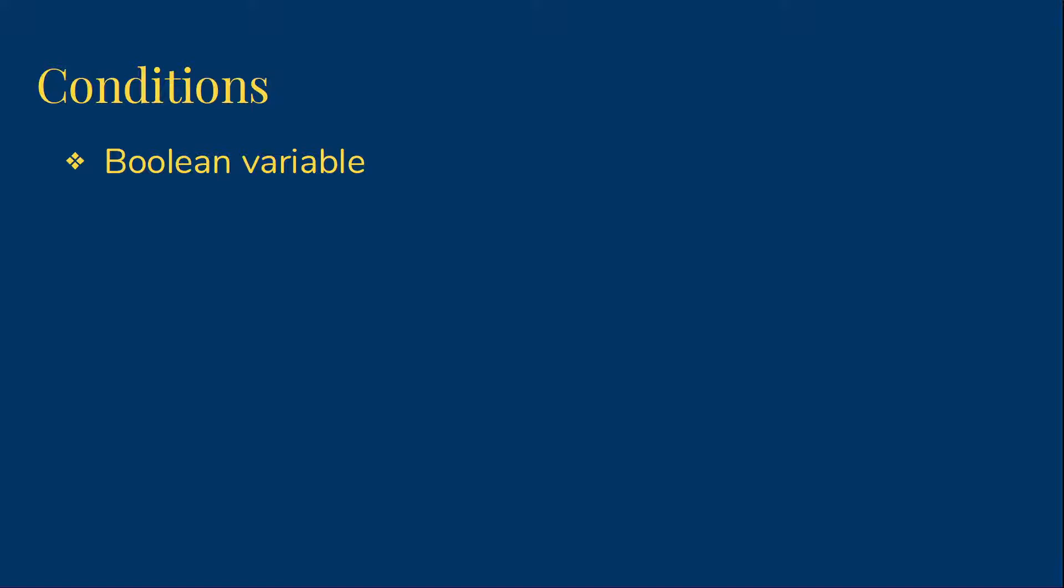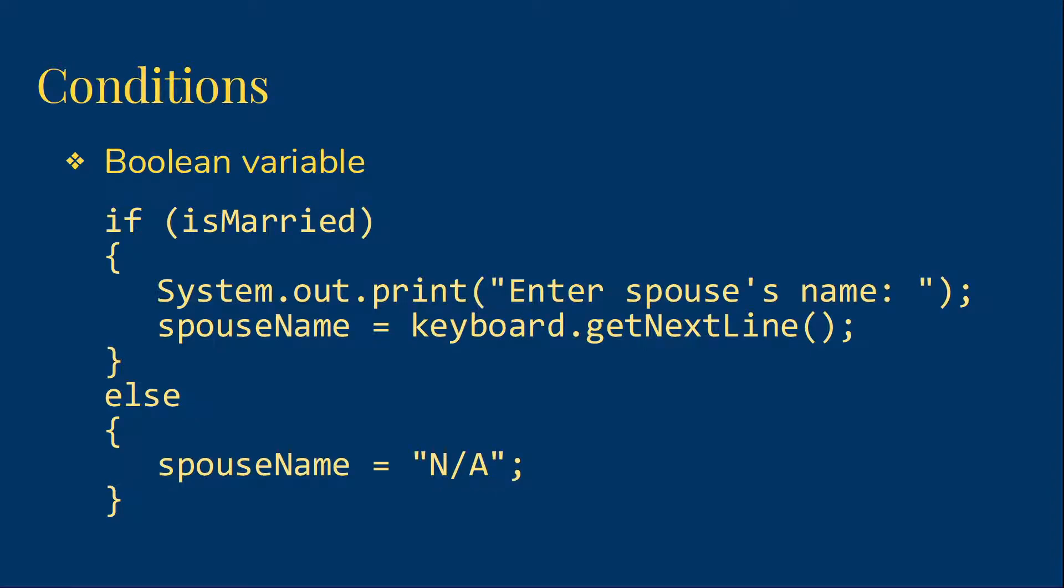For example, suppose I have a Boolean variable isMarried when getting data from a user. I might say if isMarried, ask for the spouse's name, so system.out.print, enter spouse's name, and then spouseName is assigned keyboard.getNextLine. Else, we just say the spouse name is not applicable. We don't want to ask the user for the name when we know they're not married.